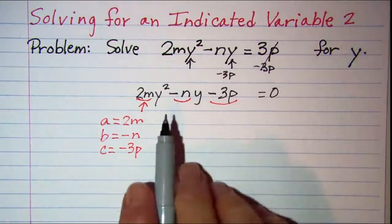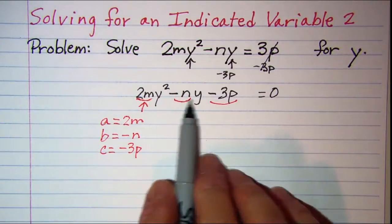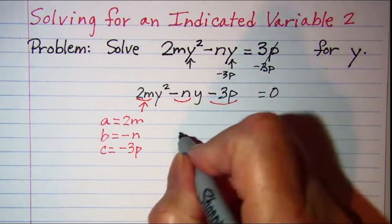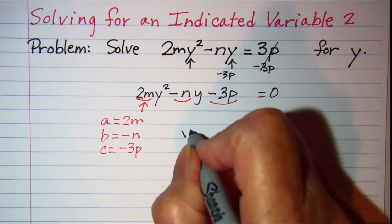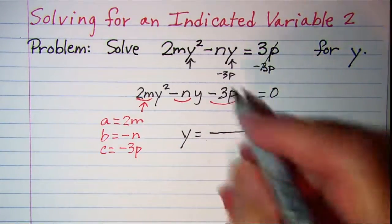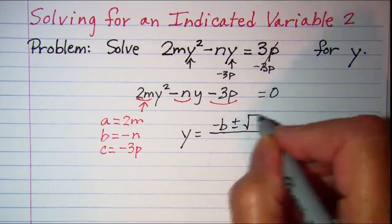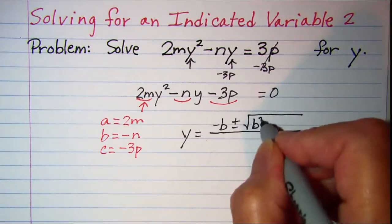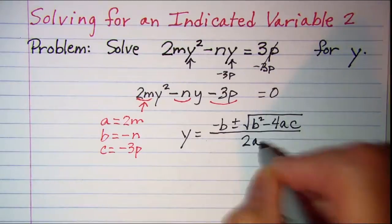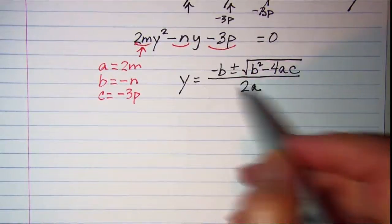To solve for y I'll use the quadratic formula. Since my equation is in y and I'm solving for y, my quadratic formula would be y equals the usual quadratic formula: negative b plus or minus the square root of b squared minus 4ac all over 2a. So let's go ahead and substitute values into our formula.